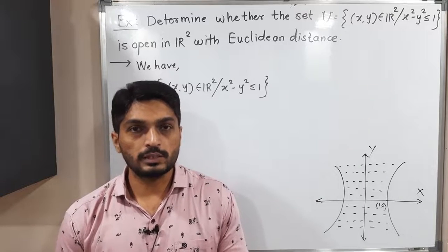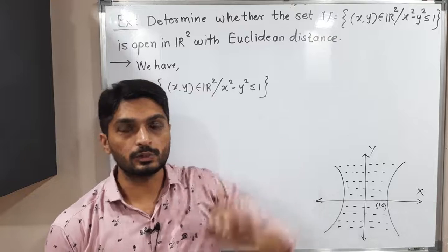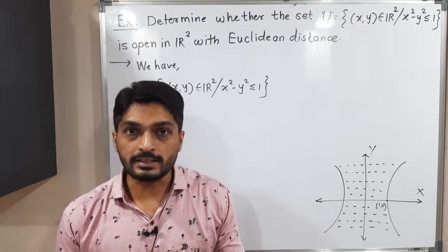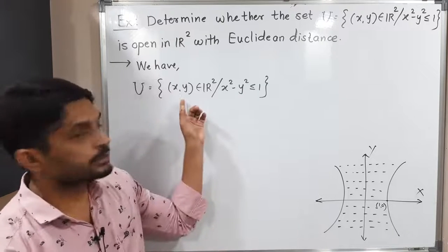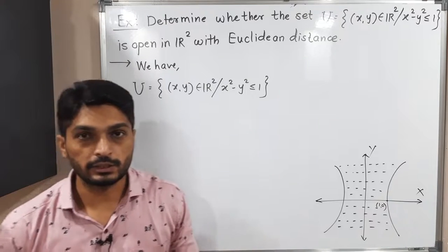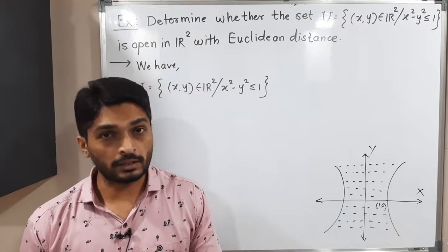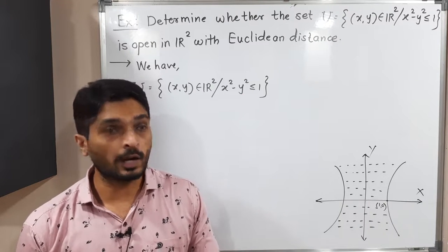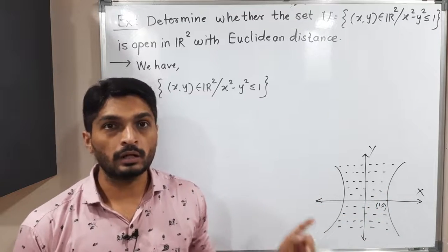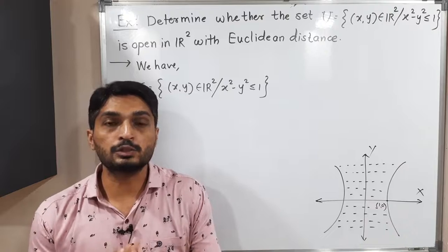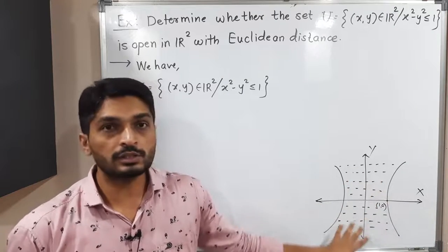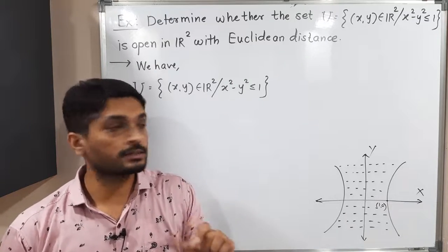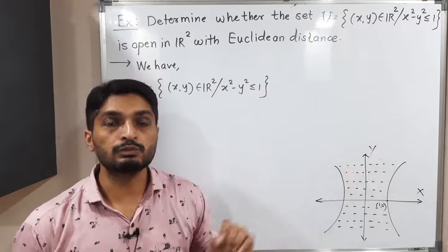Let us discuss this example. We have a set U which is defined as a subset of R² and we have to check whether that set is open or not. U is a collection of elements of R² satisfying the condition x² - y² ≤ 1. If we consider x² - y² = 1, that represents the equation of a hyperbola. We have less than or equal to 1, meaning the region bounded by the curves of the hyperbola — the shaded region — is set U. Since we have equality as well, points on the boundary (on the hyperbola curves) are also members of U.